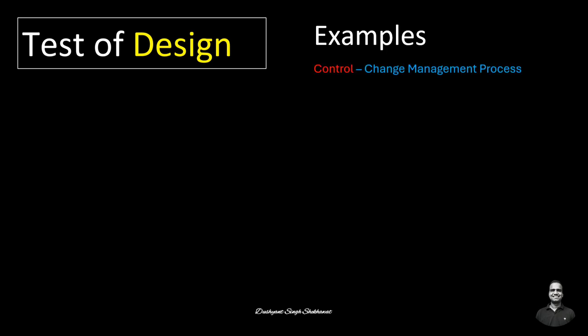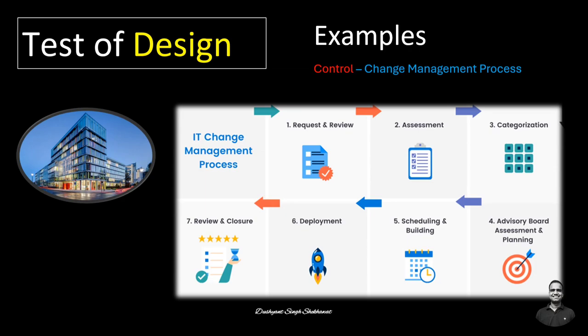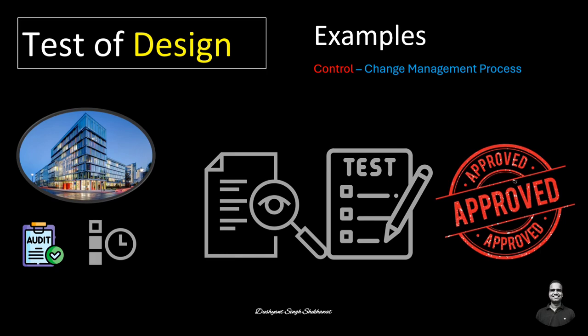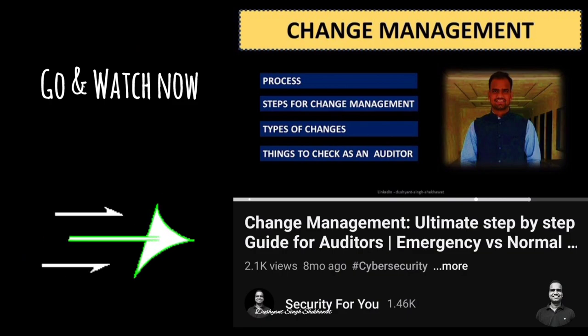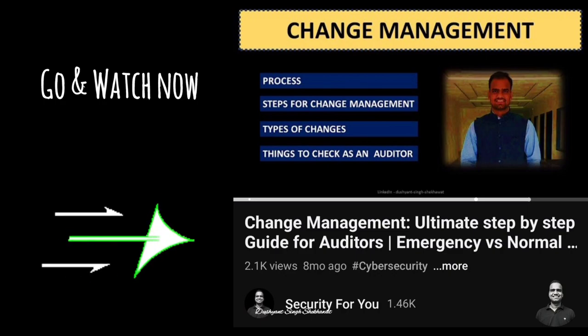Another example could be controls around the change management process. If an organization claims they have a process to ensure all changes made to their production system are authorized, the design of this could be tested. The auditor would validate that for a recent change, the change was reviewed, tested, and approved by the appropriate board. A separate video on change management is available for better understanding.